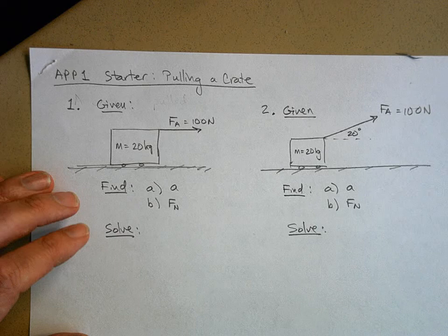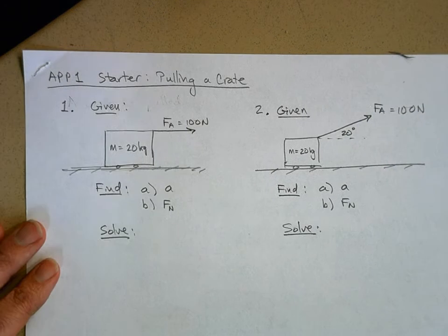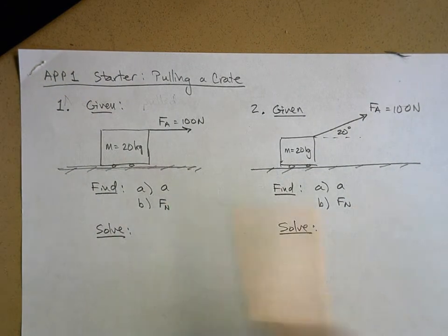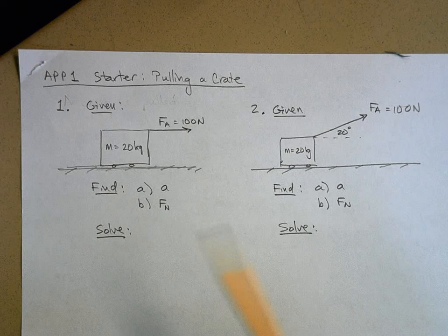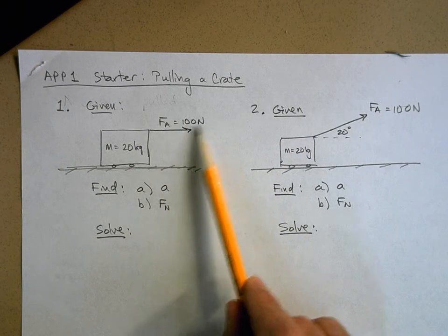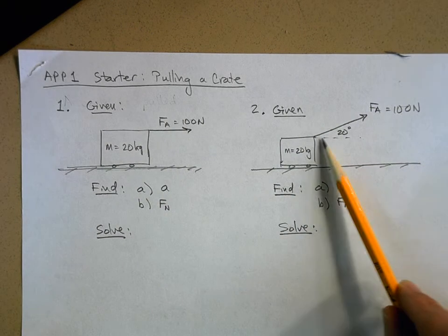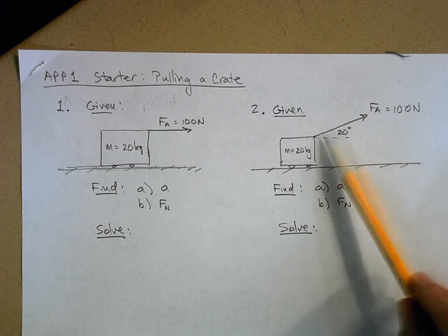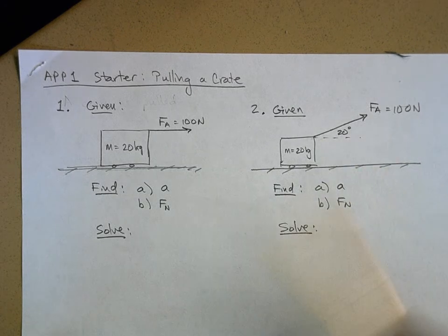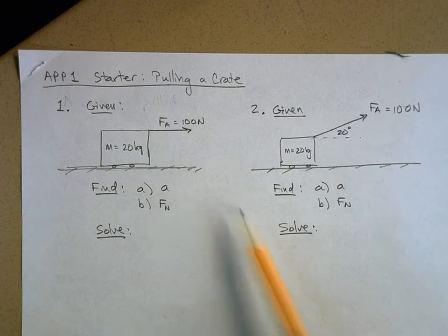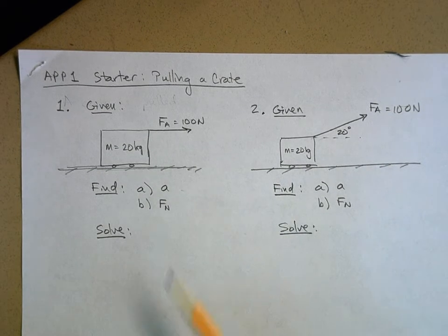So do that with these. I have two problems here. With two identical crates, they're both being pulled to the right with 100 newtons of force. But this one is not just being pulled to the right — it's also pulling up with 100 newtons of force as shown at a 20 degree angle. For both of these problems, I want to know what is the acceleration and what is the normal force.